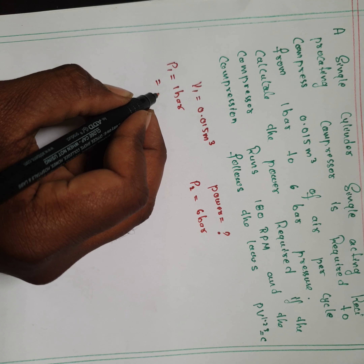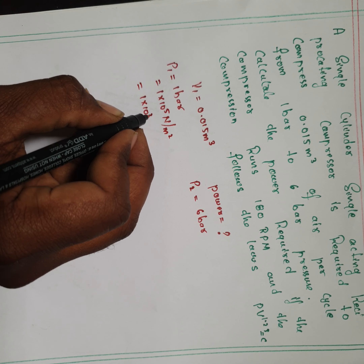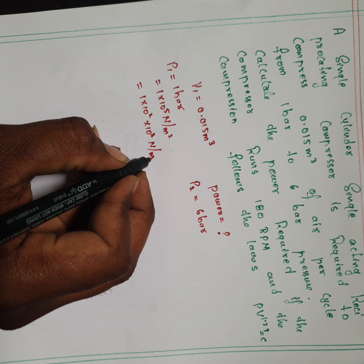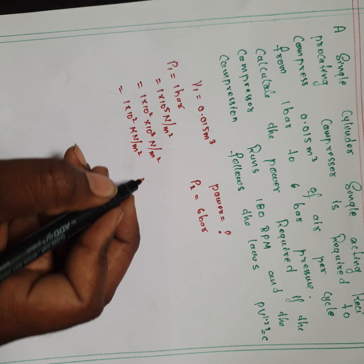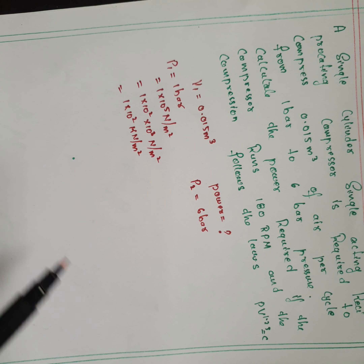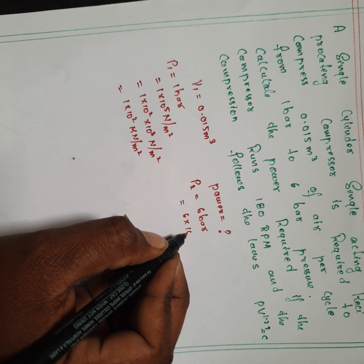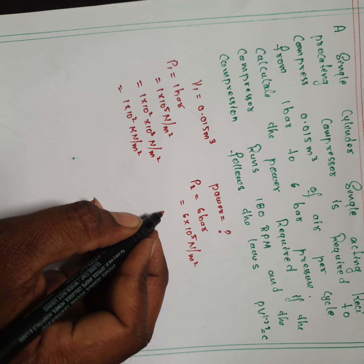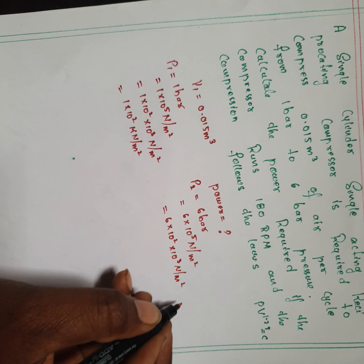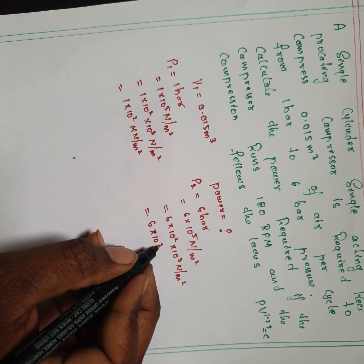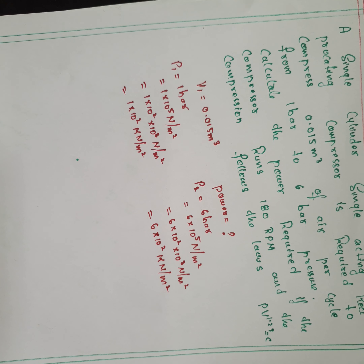Whenever pressure is given in bar, you must convert it. 1 bar equals 1 × 10⁵ N/m², which can be written as 1 × 10² kN/m². Similarly, P2 = 6 bar = 6 × 10² kN/m². So always convert bar to kN/m² before substituting.